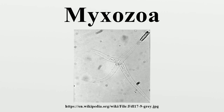Some species of mixozoa include, in Class Malachosporia: Buddenbrockia plumatella and Tetracapsuloides bryosalmonae, an important salmon parasite. In Class Mixosporia: Myxobolus cerebralis, an important parasite of salmon and trout.